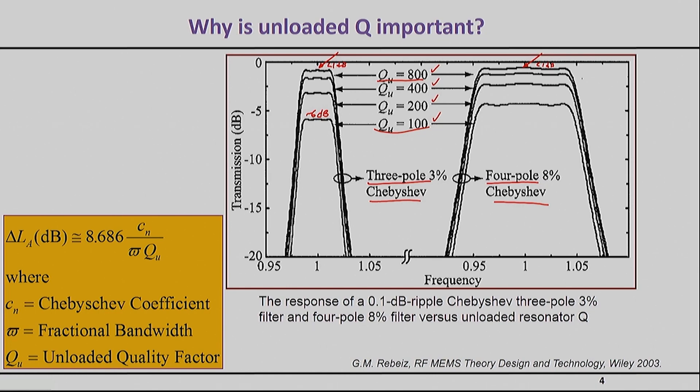So the first lesson from these curves is that there is a limit of how bad of a resonator you can tolerate. If you said, for example, that my insertion loss has to be at most 3 dB, then that means that for this case, for the three-pole Chebyshev filter, you can tolerate a resonator that has an unloaded Q of 200 and above. You can't get anything else.